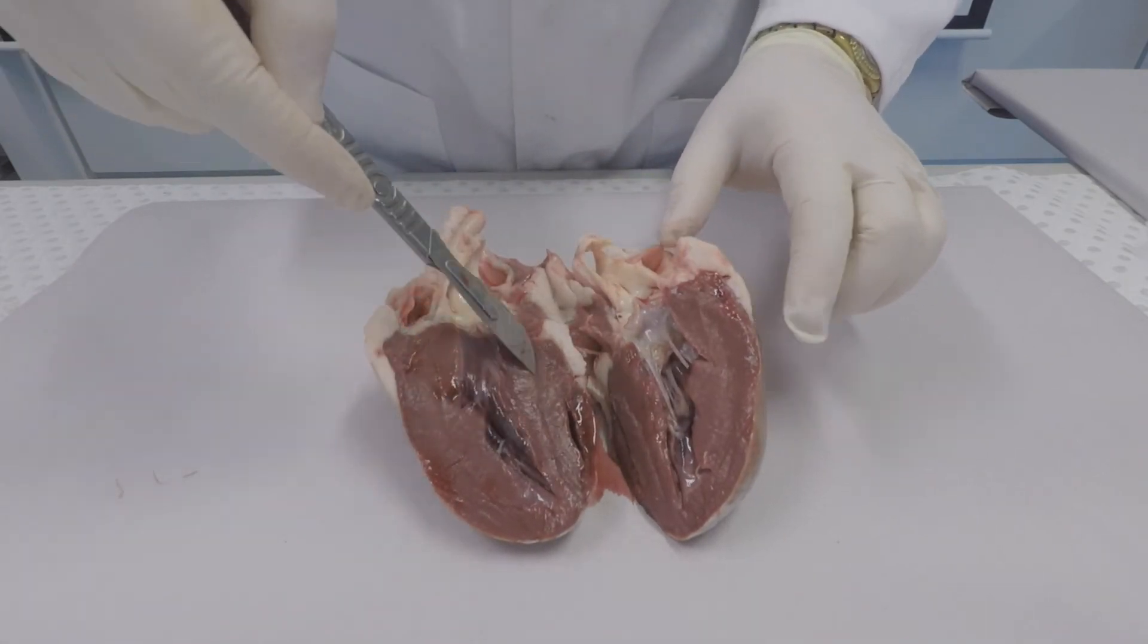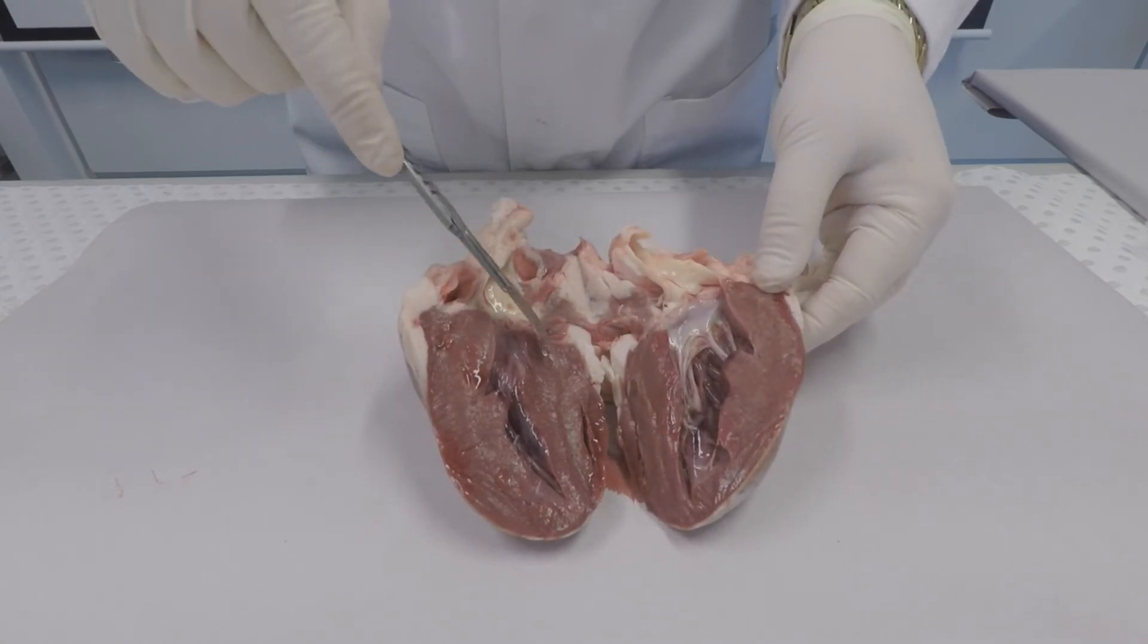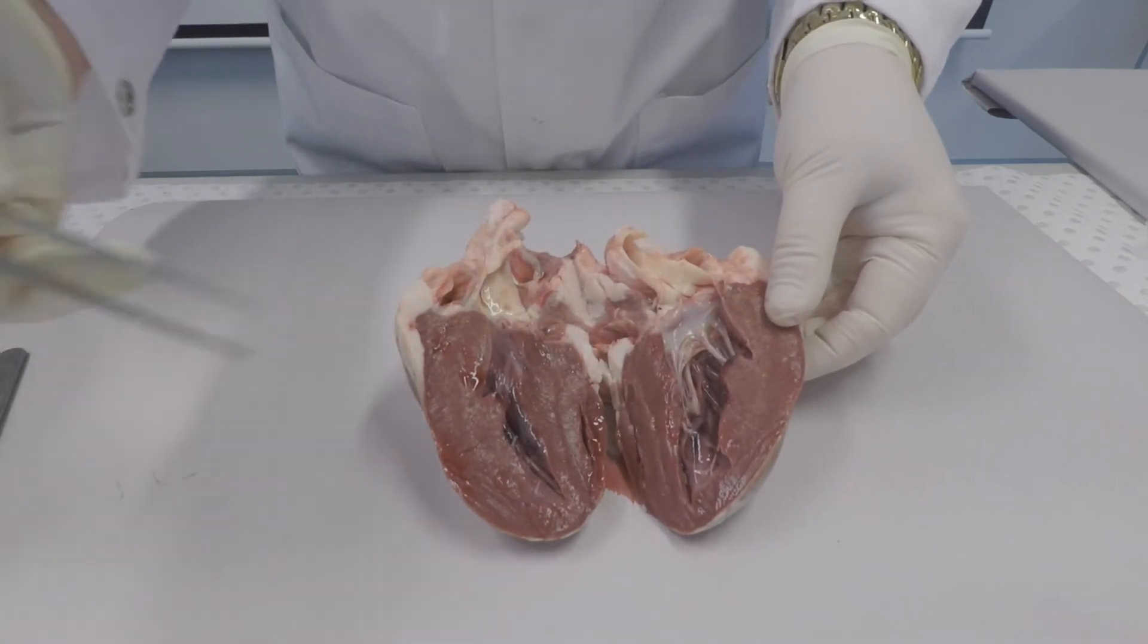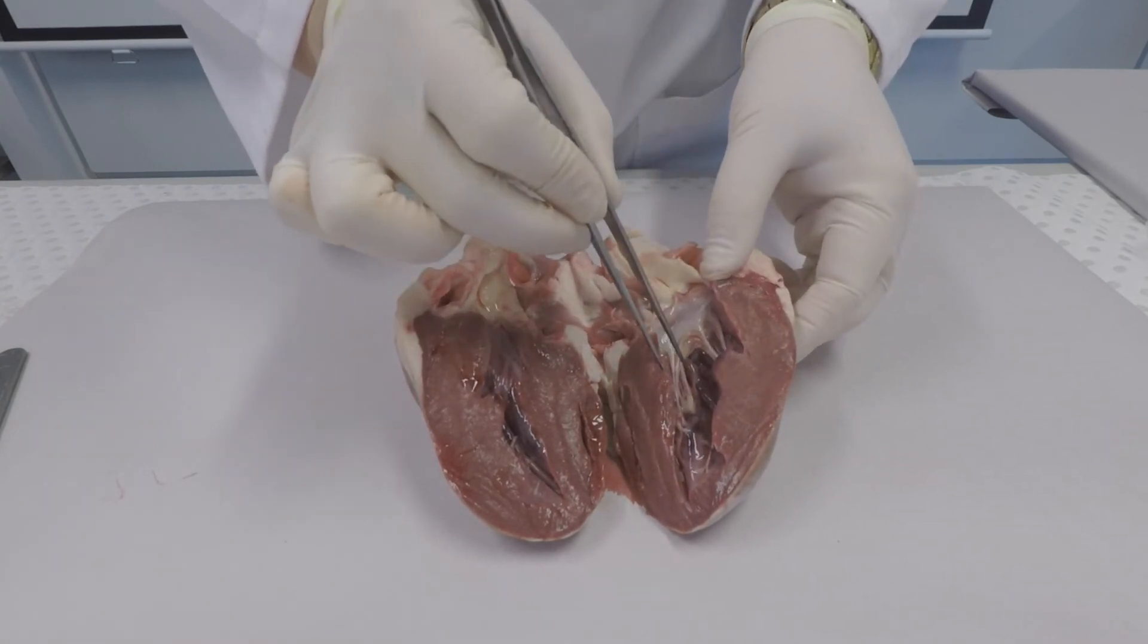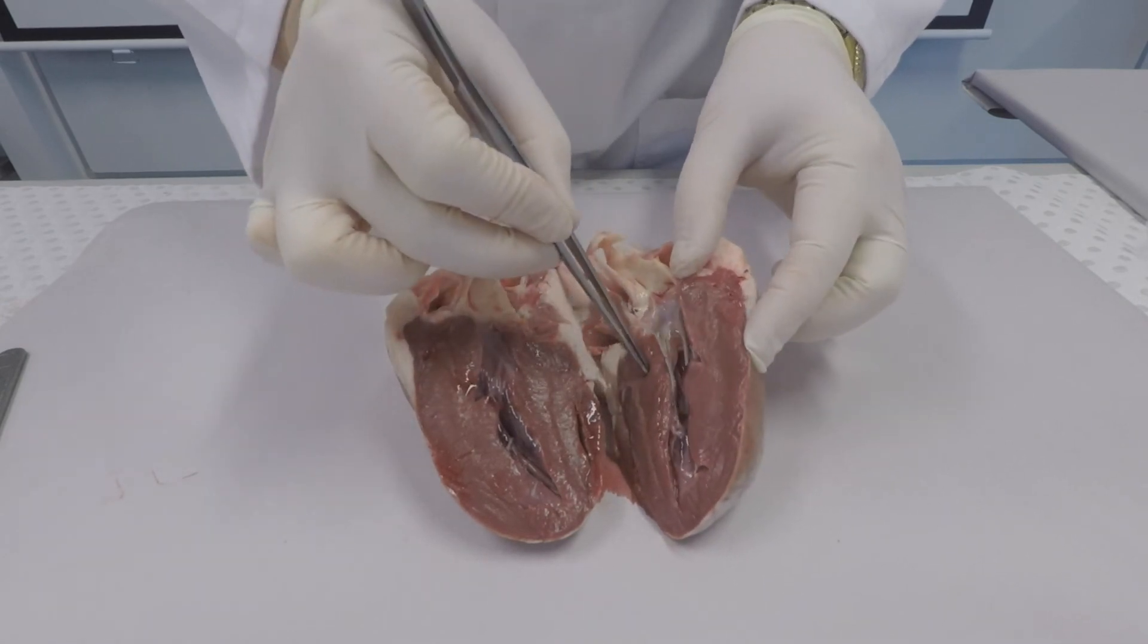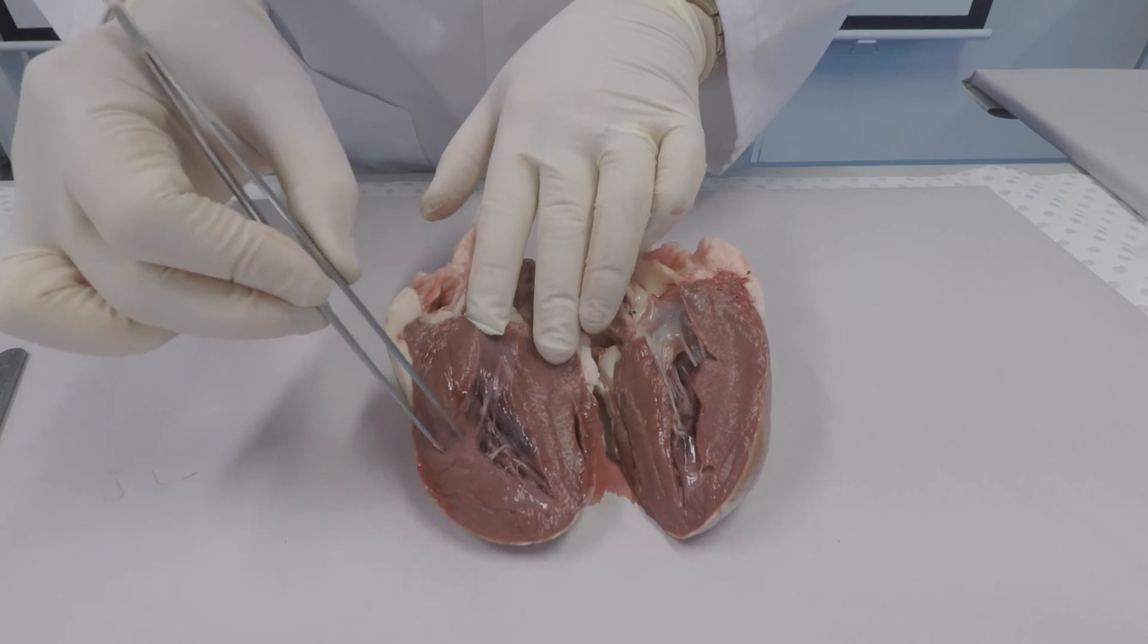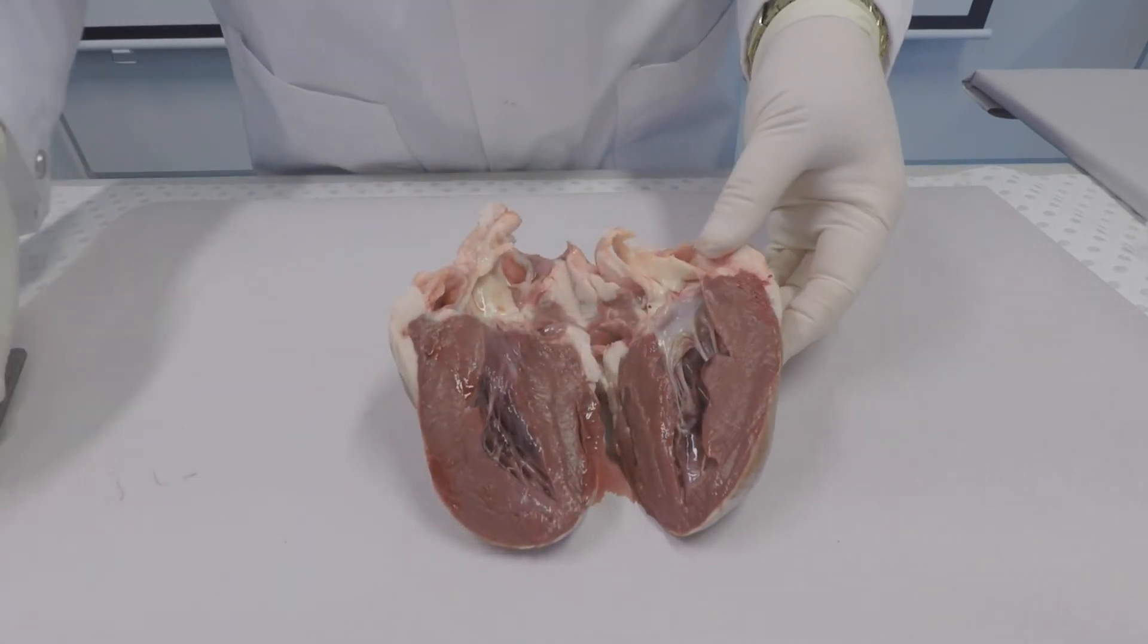You can see the ventricles and you can see string-like structures that are white in color. These parachute-like strings close the ventricles and separate the ventricle from the atria. These are called the bicuspid and tricuspid valves.